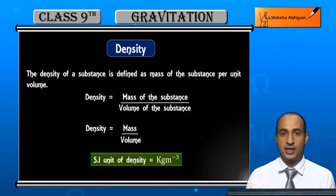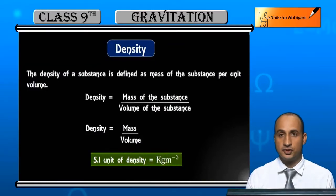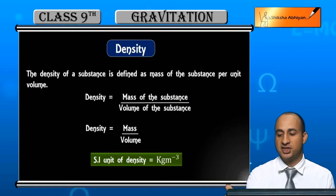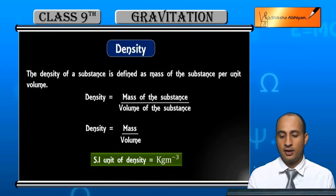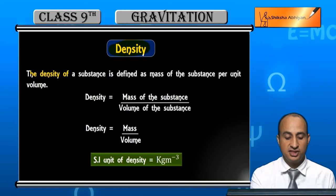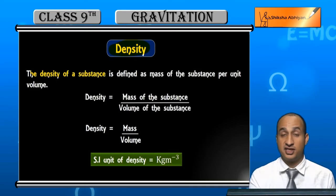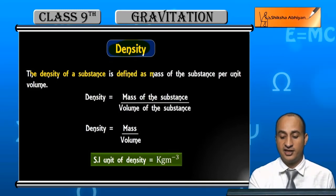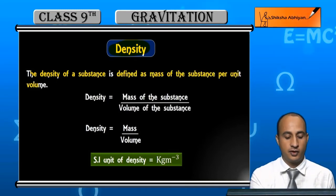Students, ab hum is chapter ka last concept density ko study karenge. What is density? Density of a substance is defined as the mass of a substance per unit volume.